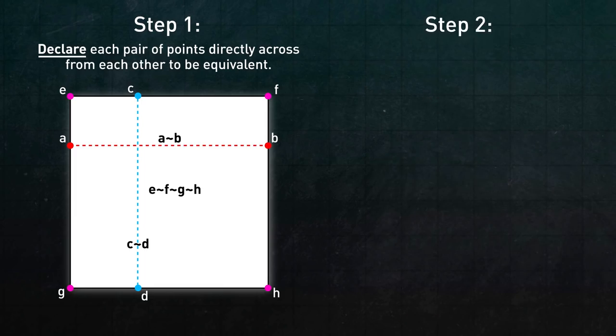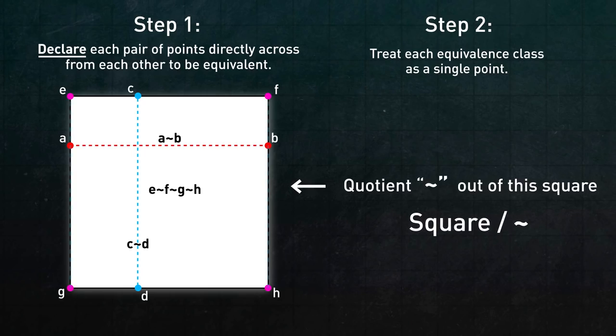Now step two, treat each equivalence class, or bucket, as if it were a single point. In other words, quotient out the square by this equivalence relation. Remember, treating equivalence classes themselves as your basic objects rather than the things inside those classes is essentially what quotienting is.